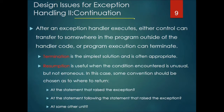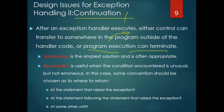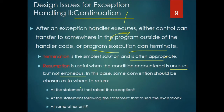One important design issue in exception handling is called termination and resumption, also referred to as continuation. After an exception handler executes, control can transfer somewhere in the program outside the handler code, or program execution can terminate. Termination is the simplest solution and is often appropriate, while resumption is useful when the condition encountered is unusual but not erroneous and we don't want to terminate the program. In that case, a convention should be chosen as to where to return — such as at the statement that raised the exception, at the following statement, or at some other unit.